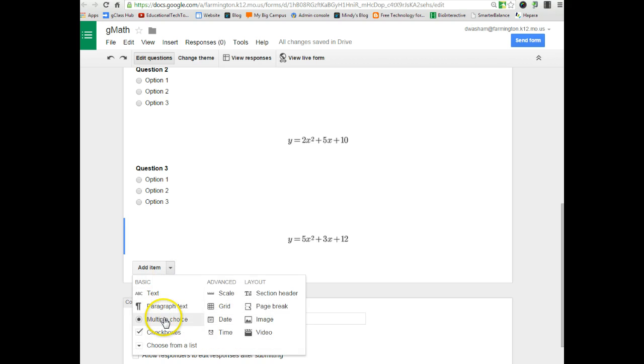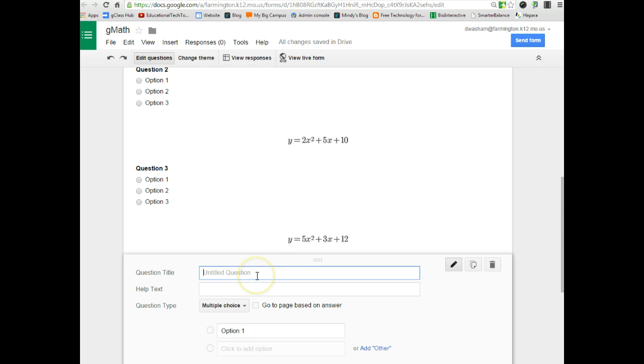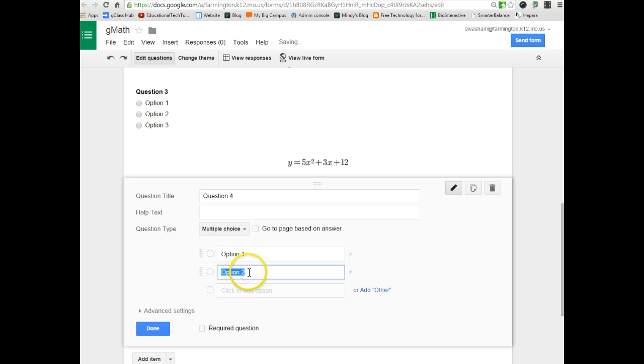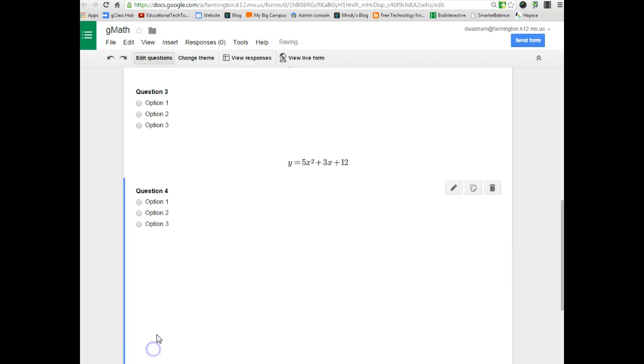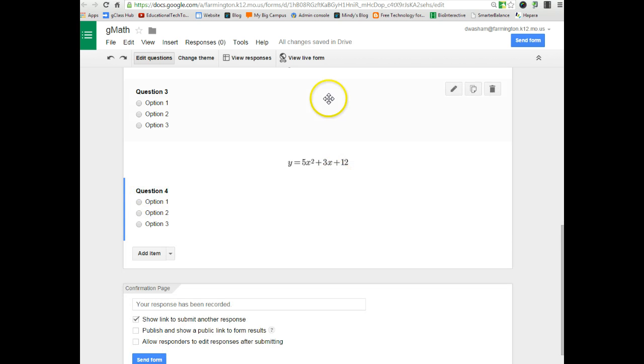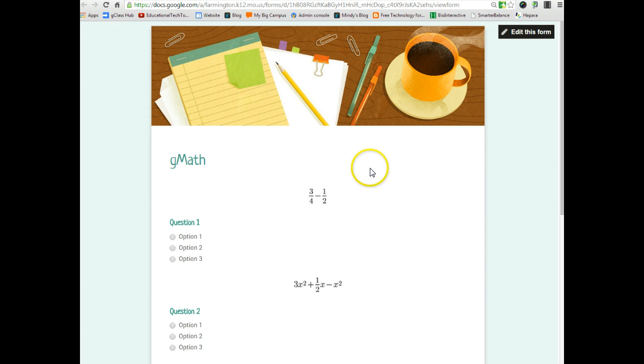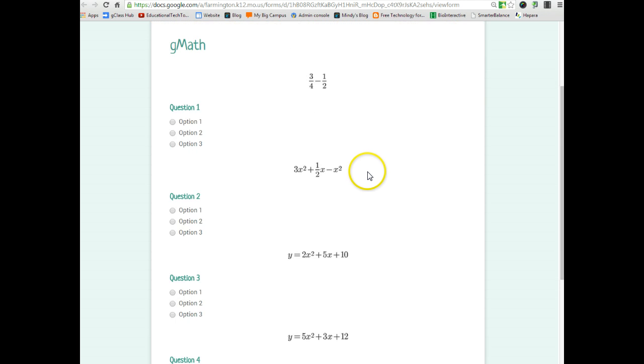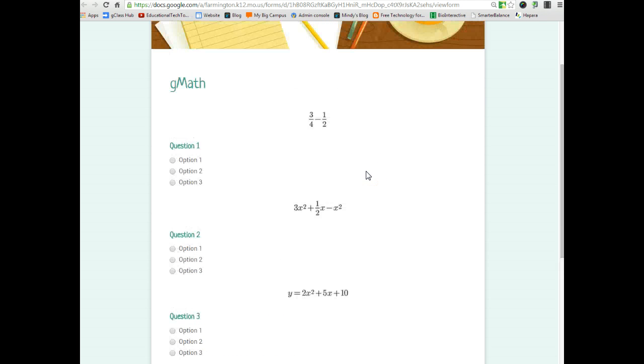And then below it I just add a multiple choice or whatever type of question you would like to add and give the students their options. And now I've added my next question. Now if I go to live form, I've got my math quiz or assignment or whatever I'm building continues to build.